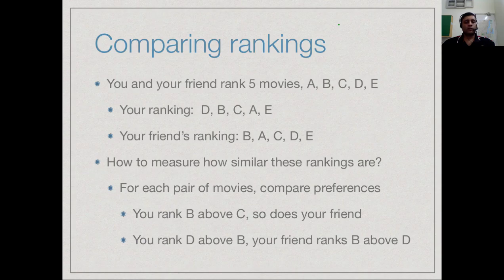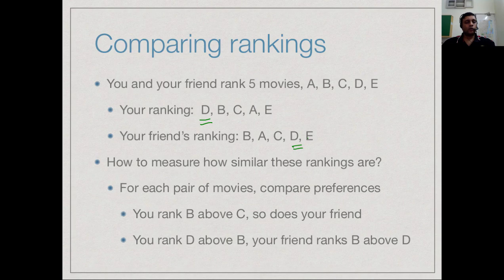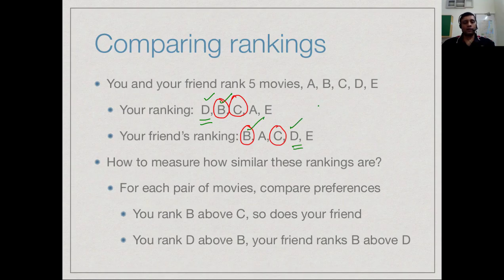We can take two sets of rankings and ask how similar or dissimilar they are. One way of measuring this is to compare how you rank pairs of movies. For each pair, you compare whether you rank one better than the other and whether your friend does too. We do not care how far apart they are — just given a choice of two things, which do you prefer, which does your friend prefer, and combine these choices across all pairs in the list.